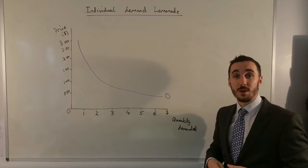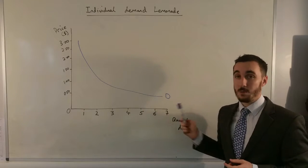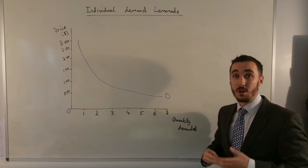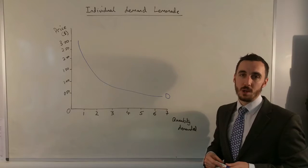Now I want to explore in a bit more detail why the demand curve for the individual is downward sloping at a decreasing rate, and this is because of the law of diminishing marginal utility which we're going to look at now.